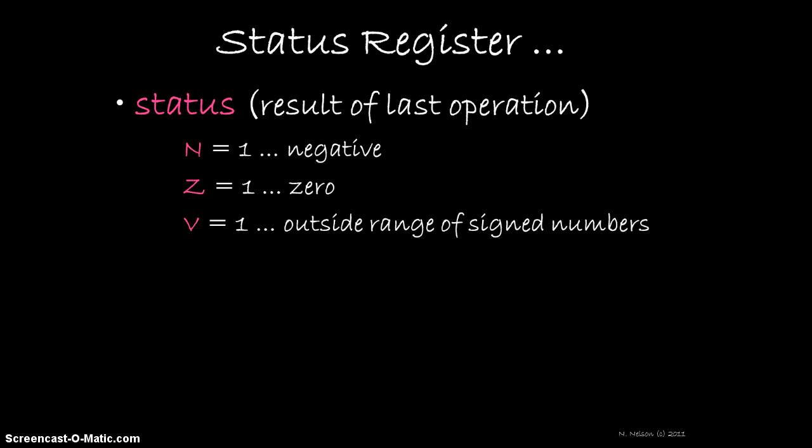For a 16-bit register, the allowable range is minus 2 to the 15, all the way up to 2 to the 15 minus 1. If the result is outside that range, the overflow bit will be set.